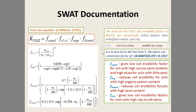From SWAT documentation, Williams (1995) developed a K equation equal to the product of four factors: f_csand, f_orc, f_hisand, and f_clsi. f_csand gives a lower erodibility factor for soils with high coarse sand content. f_orc reduces erodibility for soils with high organic carbon content. f_hisand reduces erodibility for soils with high sand content. f_clsi gives low soil erodibility factors for soils with high clay-to-silt ratios.